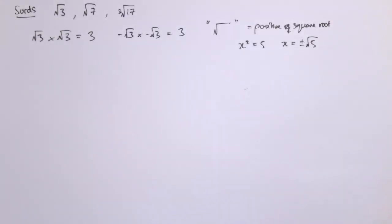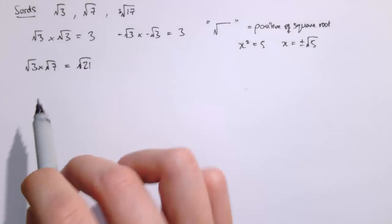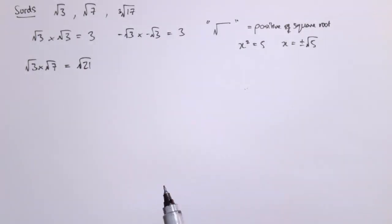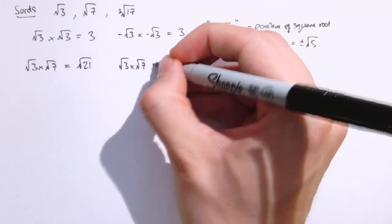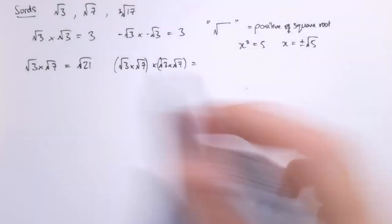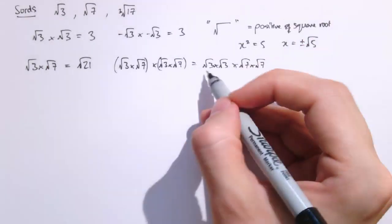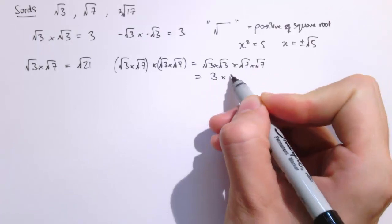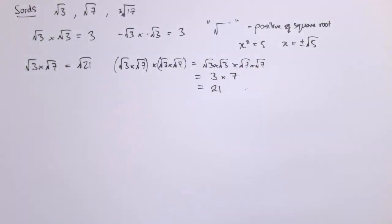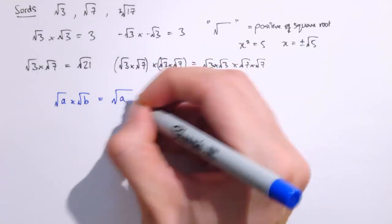Now there are some really useful rules to do with surds. The first one is about multiplying them together. If we have the square root of 3 times the square root of 7, that gives us the square root of 21, because 3 times 7 is 21. This works because of the basic definition: if we take root 3 times root 7 and multiply it by itself, rearranging gives us root 3 times root 3 times root 7 times root 7, which is 3 times 7 = 21. So in general, the square root of a times the square root of b equals the square root of a times b.